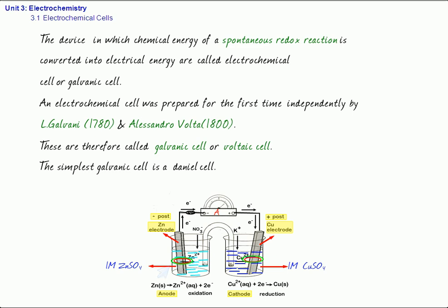So the zinc rod is dipped in zinc sulfate and the copper rod is dipped in copper sulfate solution. The two rods, which are called electrodes, are connected by a conducting wire through a key and an ammeter, which indicates the flow of current. Electrons flow from zinc to copper, and conventional current flows in the opposite direction.